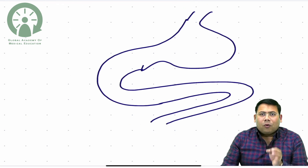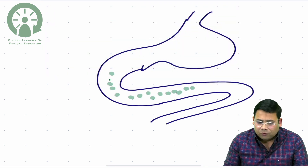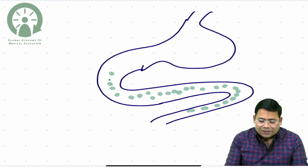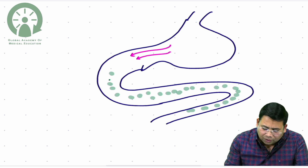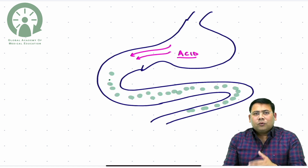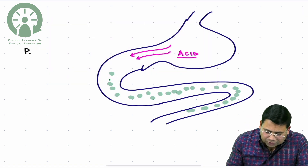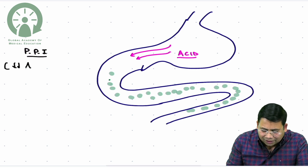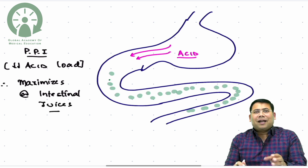In order to increase the efficacy of the intestine, we need to understand that the stomach is also giving acid. If acid enters the shortened intestine, it neutralizes some of the intestinal juices, and since the bowel is short, this effect becomes predominant. That is why we give PPIs — PPIs decrease the acid load and thereby maximize the potential of the intestinal juices, which are active in an alkaline medium.